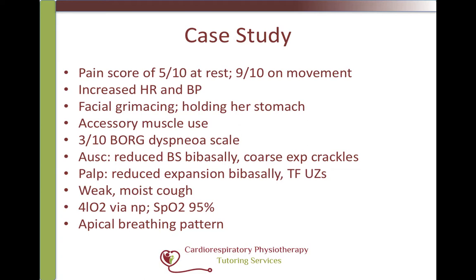Her heart rate and blood pressure are slightly elevated, likely as a result of her pain levels. She also has a rapid, shallow breathing pattern with some use of her accessory muscles. She reports struggling a bit with her breathing but only rates it at 3 out of 10 on the Borg Dyspnea scale. On auscultation you find reduced breath sounds with some scattered expiratory crackles, and on palpation you find reduced basal expansion with some tactile fremitus in the upper zones. Her cough is very weak and moist sounding, and she is currently requiring 4 litres of oxygen via nasal prongs for an oxygen saturation of 95%.